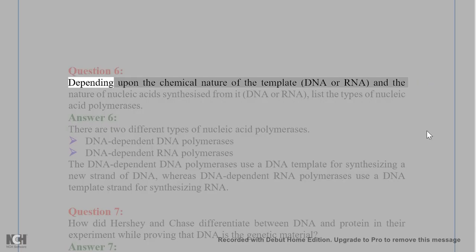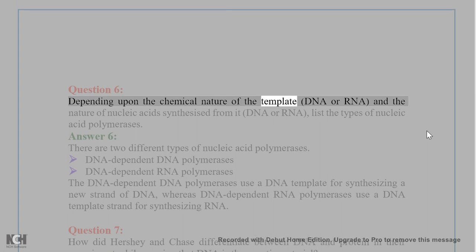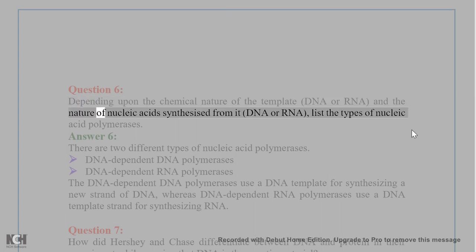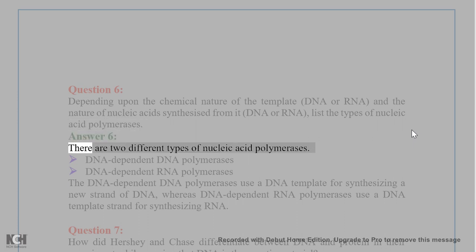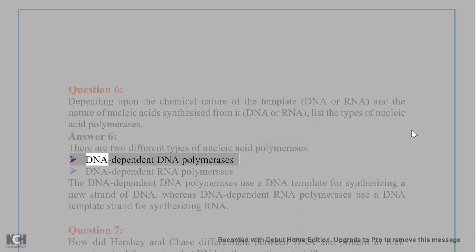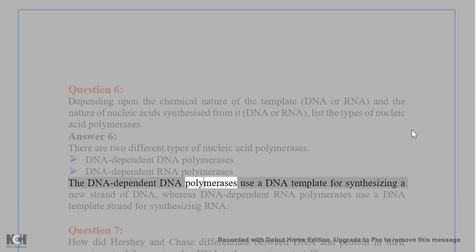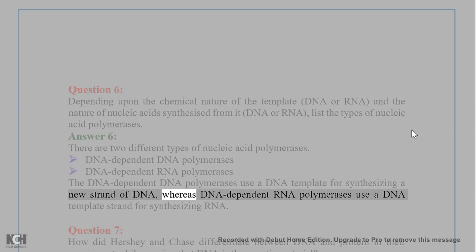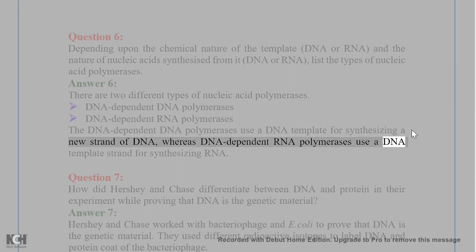Question 6. Depending upon the chemical nature of the template — DNA or RNA — and the nature of nucleic acid synthesized from it — DNA or RNA — list the types of nucleic acid polymerases. Answer 6. There are two different types: DNA-dependent DNA polymerases, which use a DNA template for synthesizing a new strand of DNA, and DNA-dependent RNA polymerases, which use a DNA template for synthesizing RNA.